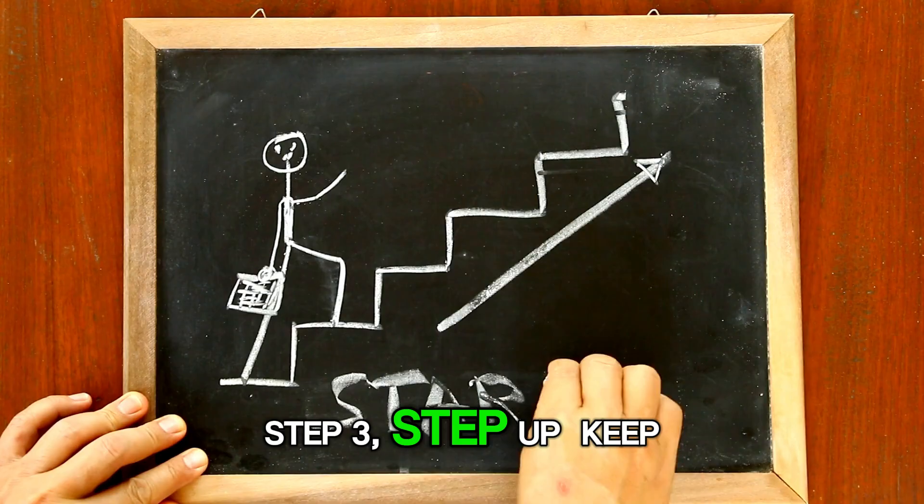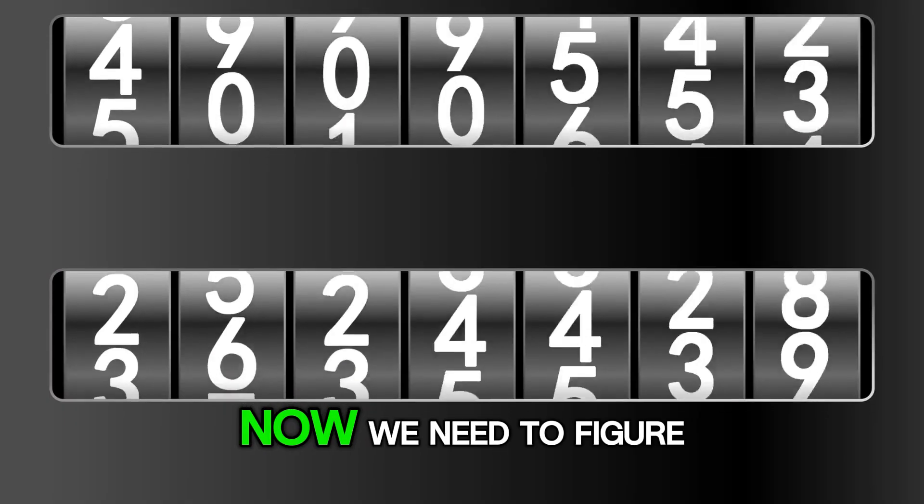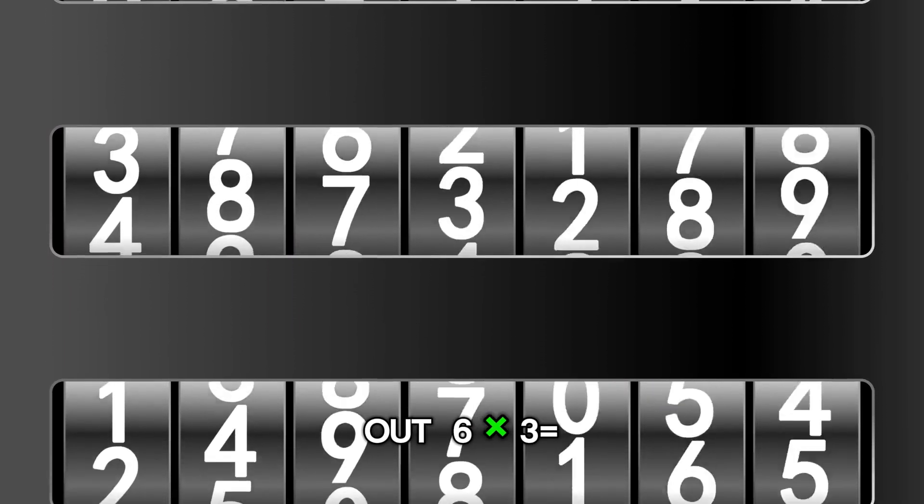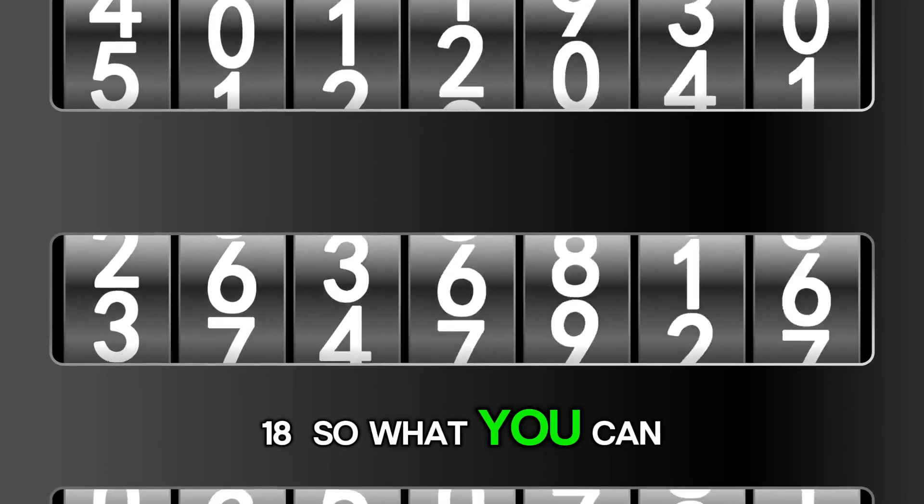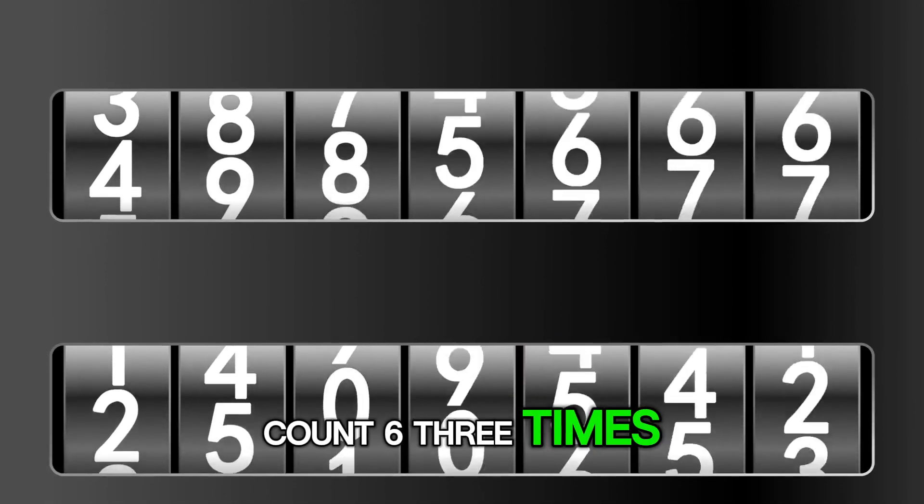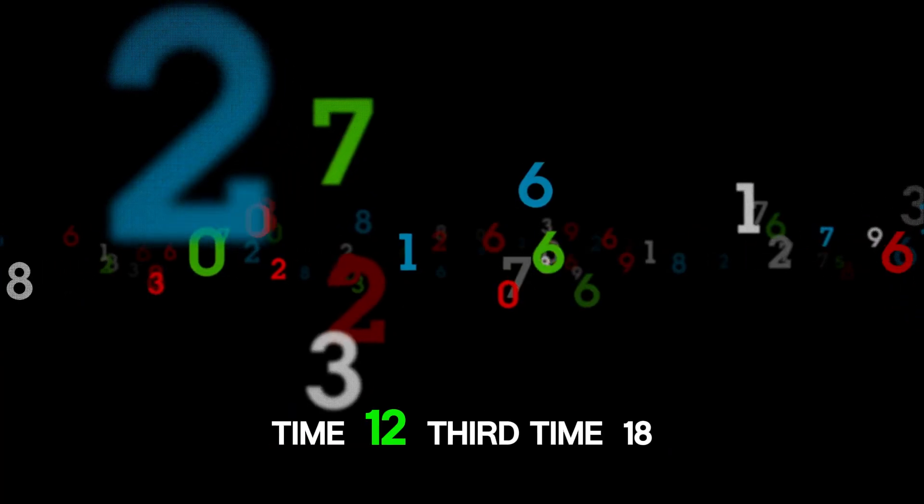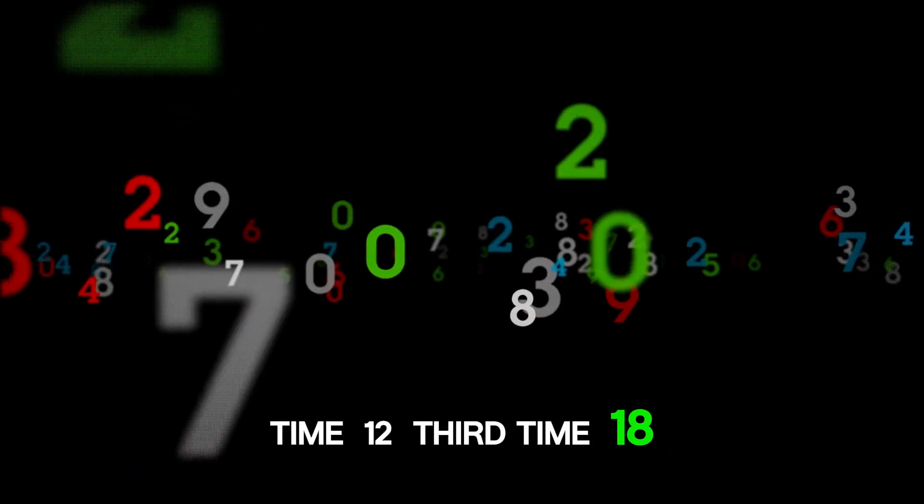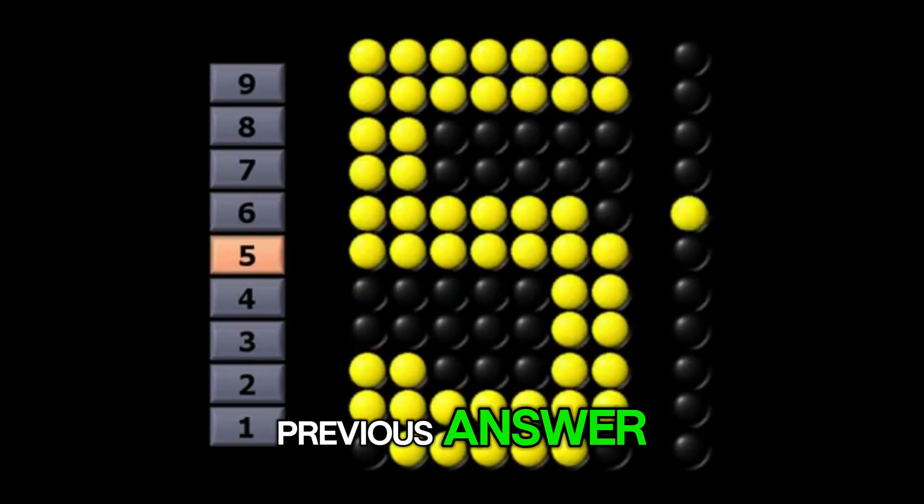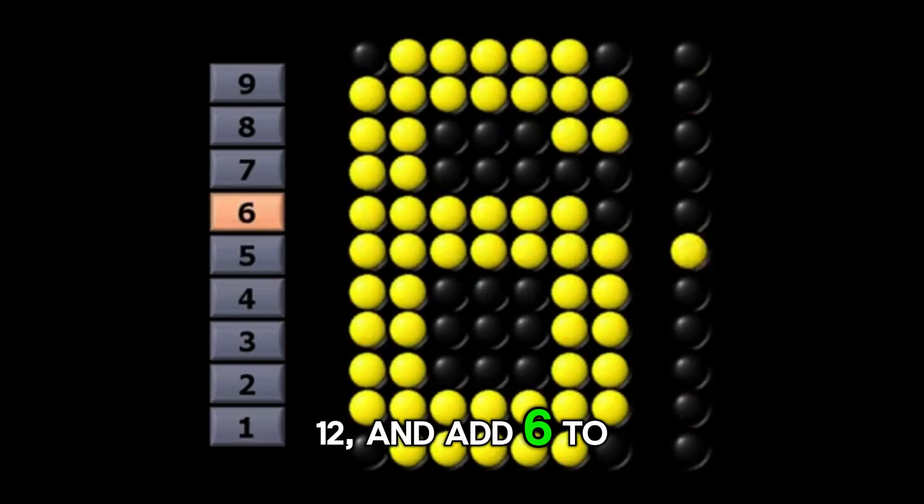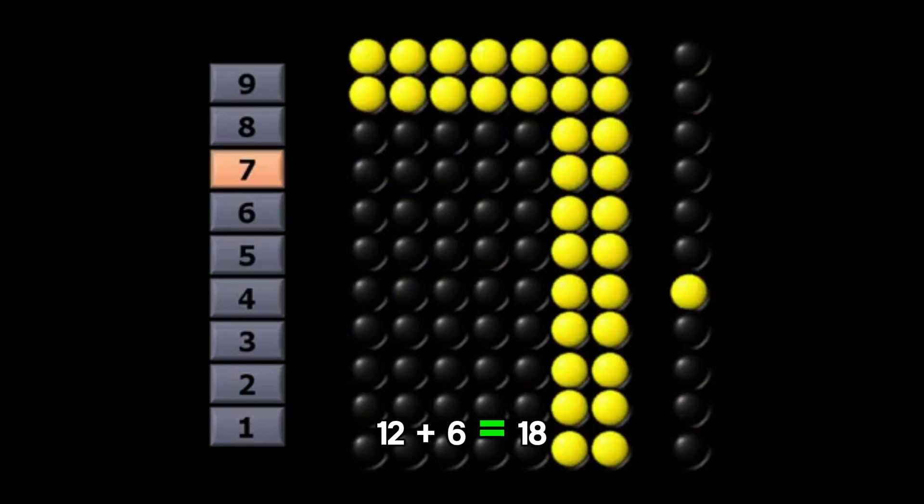Step 3. Step up. Keep going. Now we need to figure out 6 times 3 equals 18. So what you can do is just count 6 three times. First time, 6. Second time, 12. Third time, 18. Or you can take the previous answer, 12, and add 6 to it. 12 plus 6 equals 18.